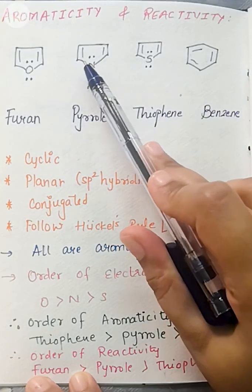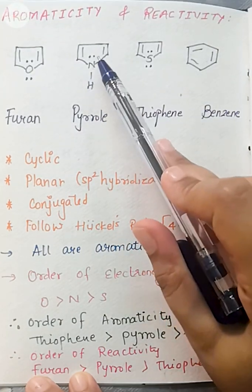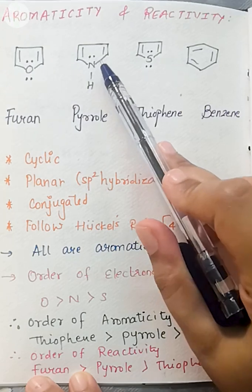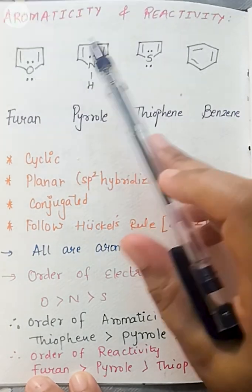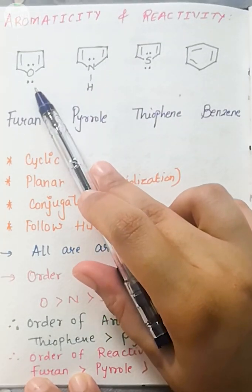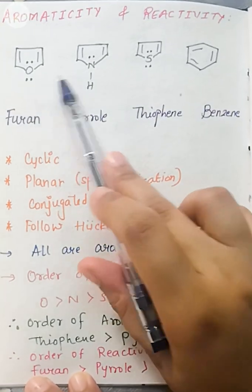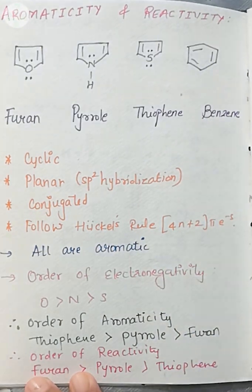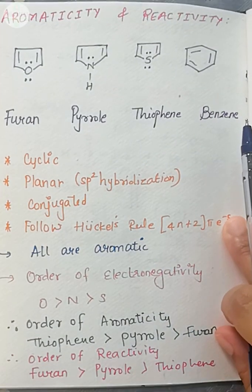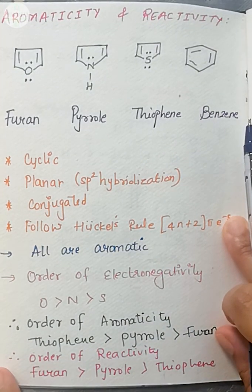Here I have three single bonds and one lone pair. This means this hybridization is sp2. The same oxygen hybridization also is sp2. So all the molecules are planar because all the atoms in these molecules are sp2 hybridized.